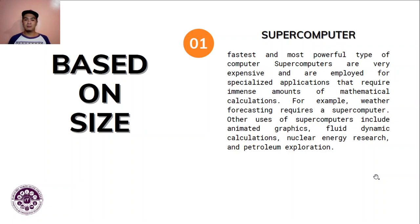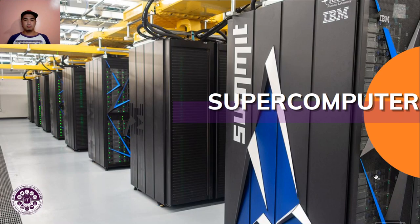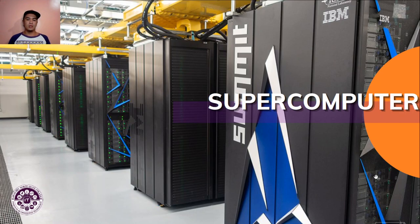If you were to visit NASA's office, you'd find supercomputers — that's what they use to communicate with satellites. It can't be done with a simple PC setup. The servers you see in images are a big part of supercomputers — they're used for storing and accessing data simultaneously.